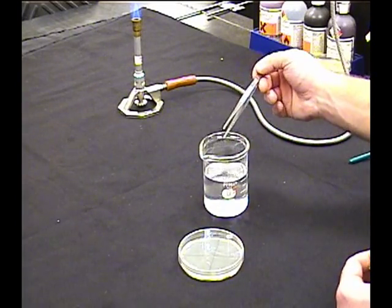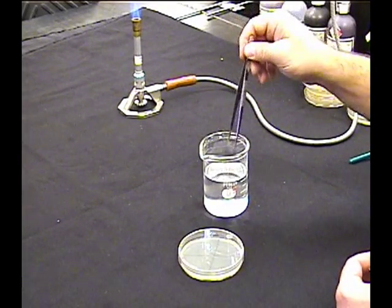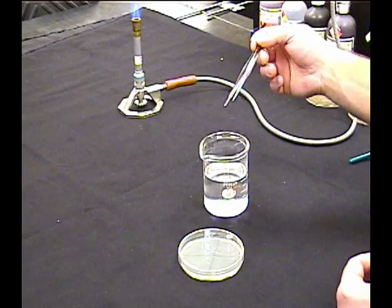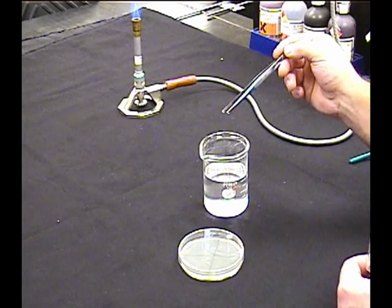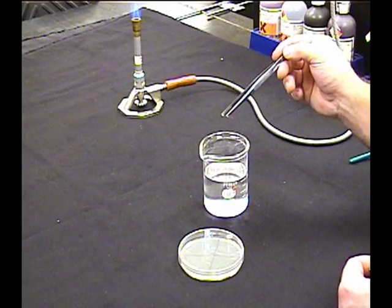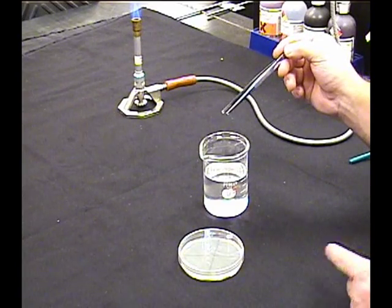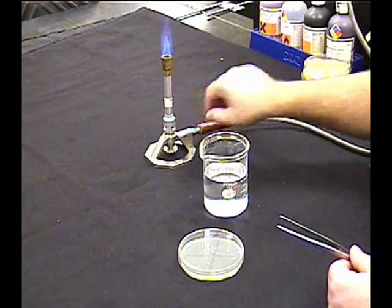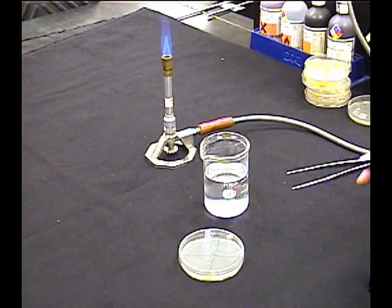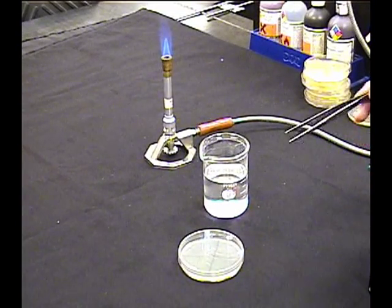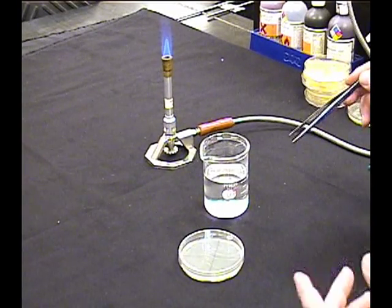But it does a pretty good job of sterilizing for the most part the forceps. But if we pull these out we have a problem because now they're covered with ethanol. We've got to get the ethanol off. How are we going to do that? Well we can let it dry, just let it air dry, but we'd be here forever. So there's a quicker way. Fire. Now you remember I told you that we're not going to flame it, but ethanol burns so we can just burn it off. We can ignite it.